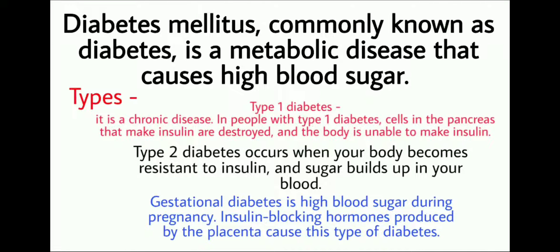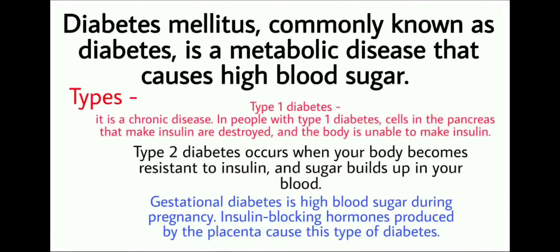We can classify diabetes into three main types: Type 1, Type 2, and gestational diabetes. Type 1 diabetes is a chronic disease in which cells in the pancreas that make insulin are destroyed, and the body is unable to make insulin.